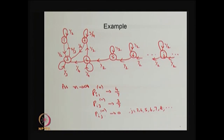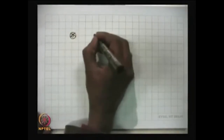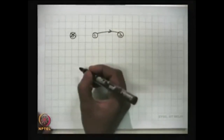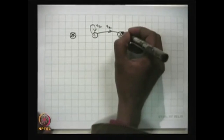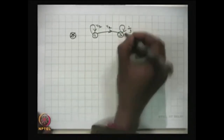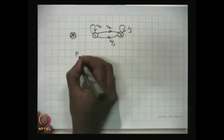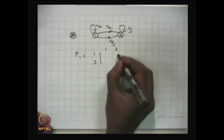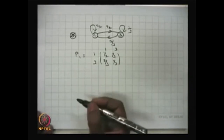For the closed communicating class of states {1, 3}, you can find the probabilities by constructing the Markov chain for just those two states. There is a self-loop at state 1 with probability 1/2, a transition from 1 to 3 with probability 1/2, a self-loop at state 3 with probability 1/3, and a transition from 3 to 1 with probability 2/3. The stochastic sub-matrix P1 for states 1 and 3 is therefore [[1/2, 1/2], [2/3, 1/3]], which you can verify is a valid stochastic matrix.